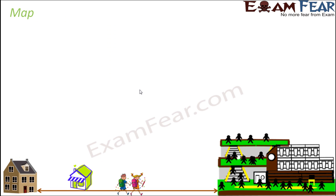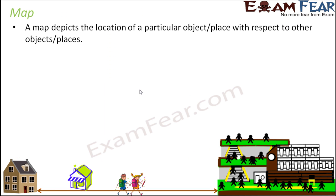What is a map? A map is that one thing which depicts the location of a particular object or place with respect to other objects or places. This portion is very important. You just can't miss this. A map must be created in such a way that it should be with respect to all other objects. That is what we mean by proportionate thing.